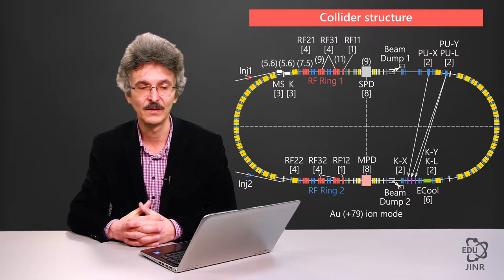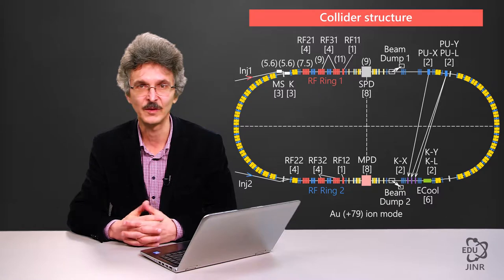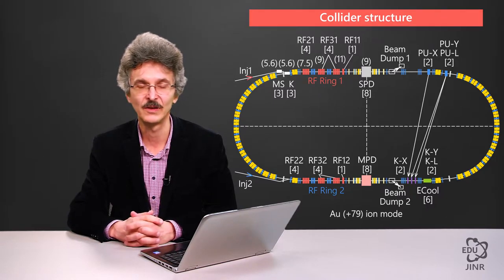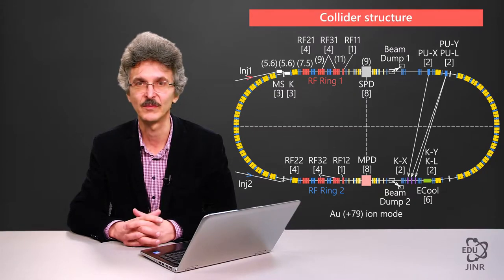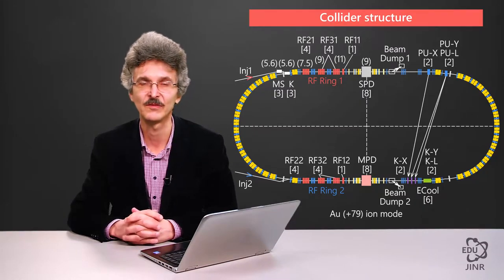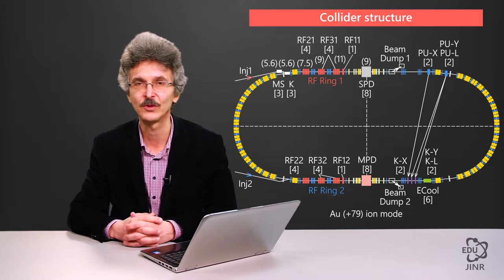The center of the straight sections is occupied by a detector. There are about 9 meters allocated for each detector. The largest part of the remaining straight section is occupied by the RF or radio frequency system.